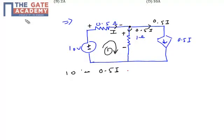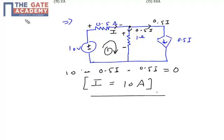You can simplify this: 10 - 0.5I - 0.5I = 0, so I equals 10 amperes. The current of the circuit is 10 amperes.